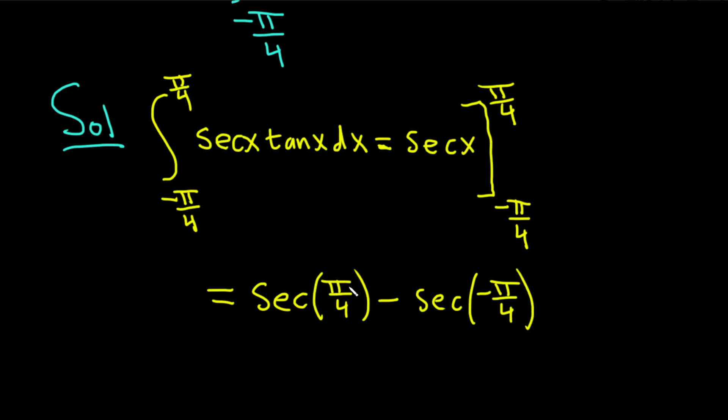Okay, so secant of the number up top minus secant of the number on the bottom. Secant is 1 over cosine. So secant x is 1 over cosine x. And we know that the cosine of pi over 4 is the square root of 2 over 2. So this is 1 over the square root of 2 over 2 minus.